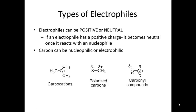Now let's look at some electrophiles. A couple of key things: electrophiles can be positive or they can be neutral. If an electrophile starts out positive, once it reacts with a nucleophile it becomes neutral. Carbon can be nucleophilic or electrophilic — the electrophiles here are all carbon electrophiles. Carbocations are good electrophiles. The definition of an electrophile is an electron pair acceptor; we also call them Lewis acids, and we say they are electron poor, electron deficient, or electron sinks. Nucleophiles are sources; electrophiles are sinks.